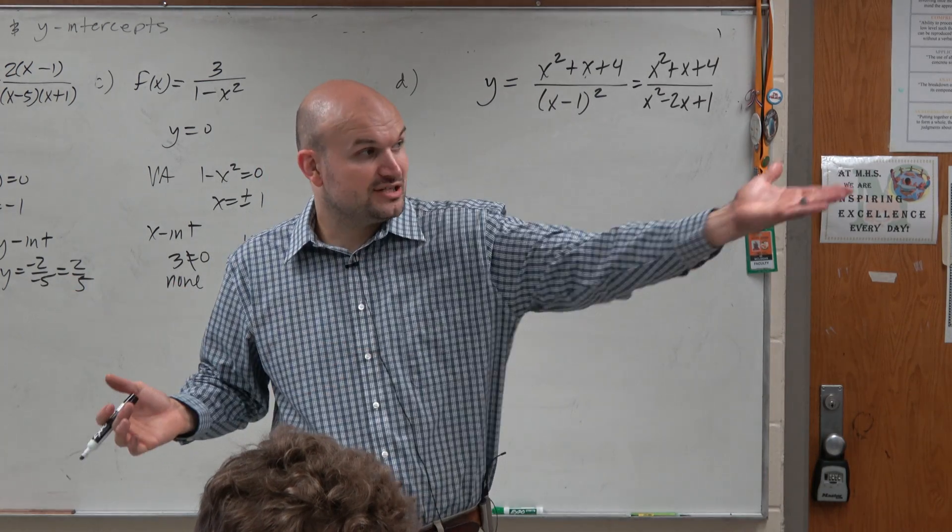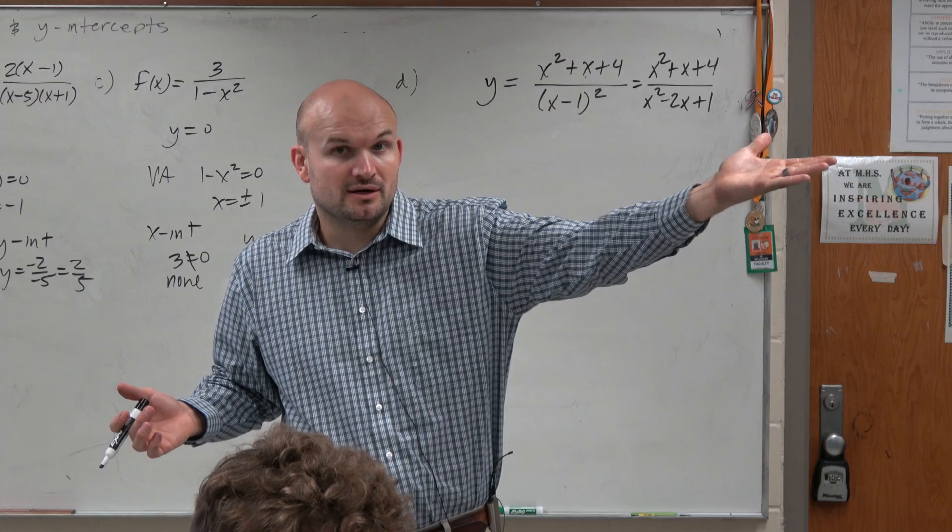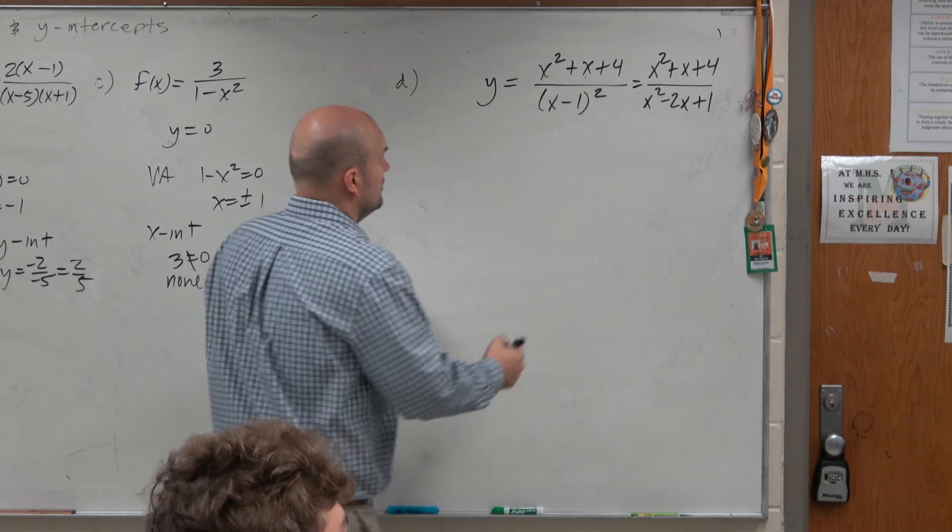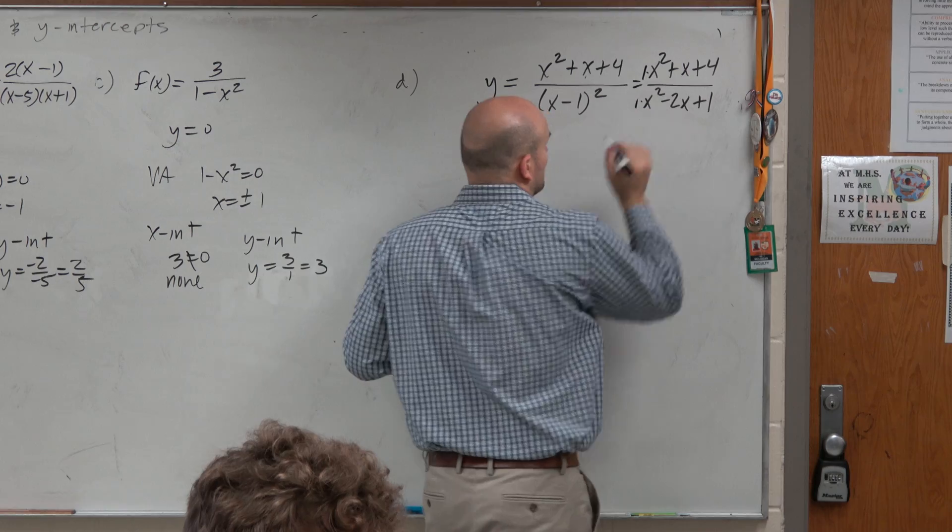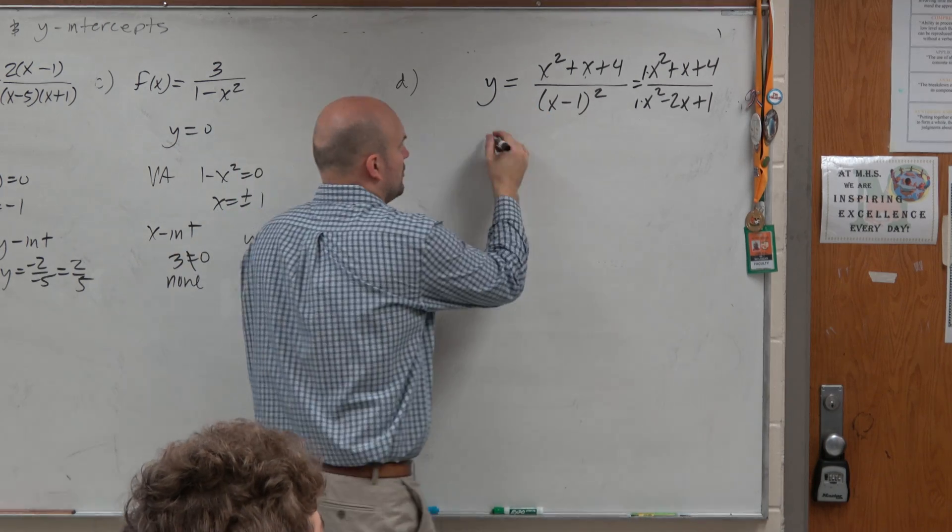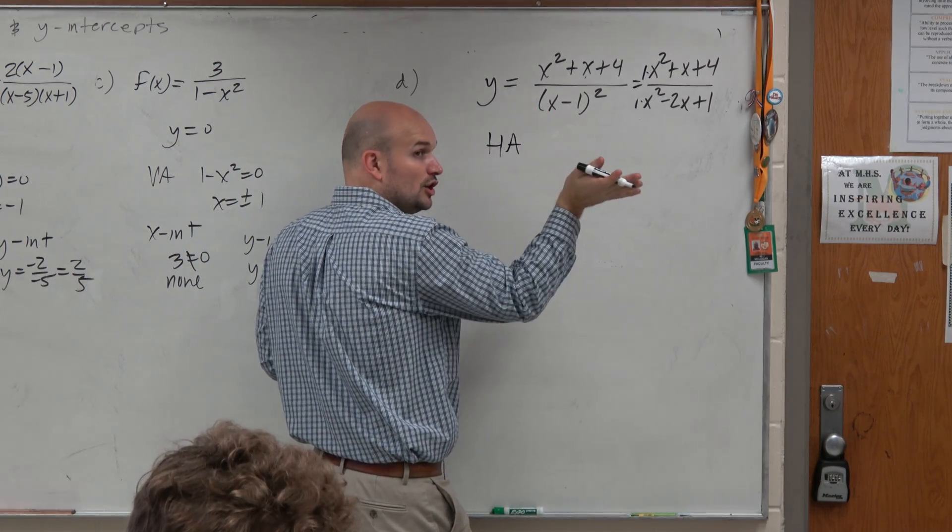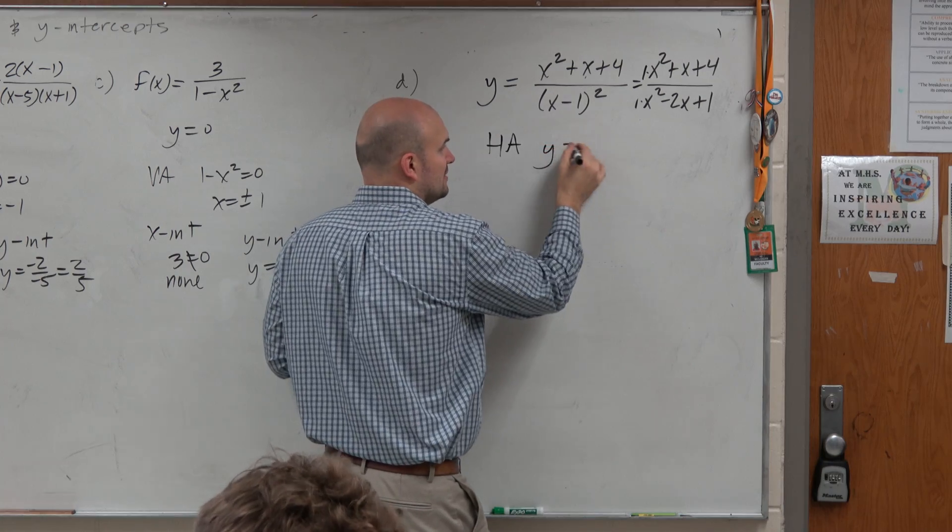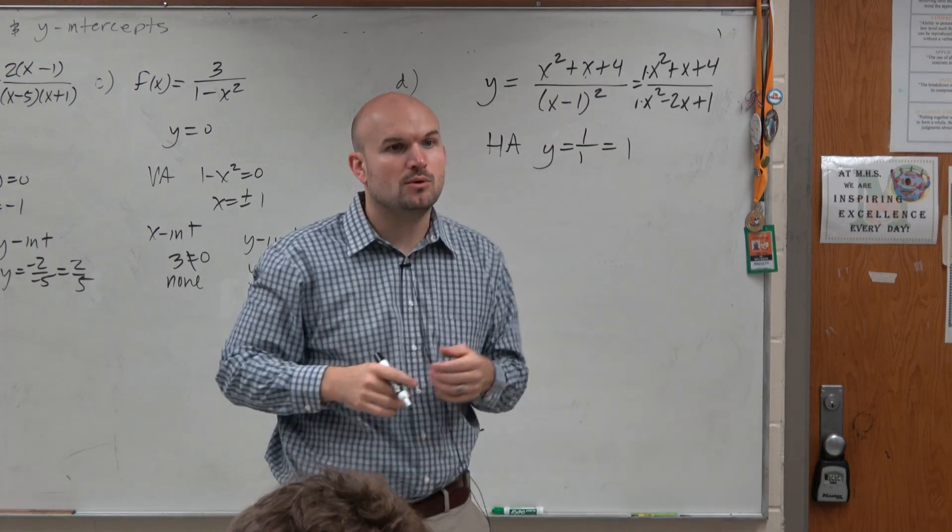When the degrees are the same, yeah, you're just taking the leading coefficient of your numerator, dividing it by the leading coefficient of your denominator. Well, the coefficients here are 1 and 1. So my horizontal asymptote per the horizontal asymptote test is y equals 1 over 1, or just y equals 1.